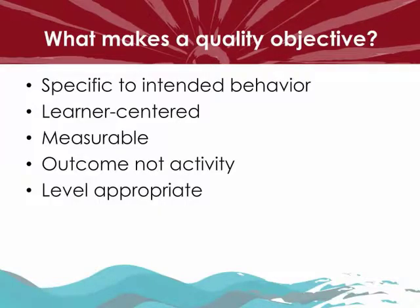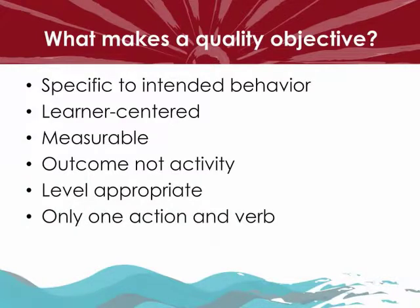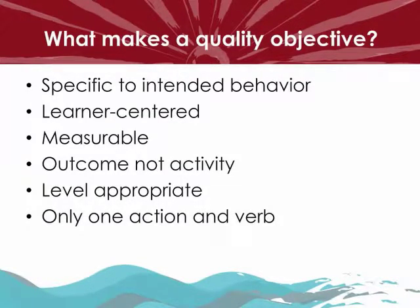Objectives should be appropriate for the level of students. This presentation will later present Bloom's Taxonomy. Level appropriateness does not mean we don't challenge students to reach higher orders of the cognitive domain; it means the way we ask them to reach higher order learning uses skills and knowledge appropriate for their place in material acquisition. Finally, quality objectives are simply stated using only one action and one verb — avoid compound objectives. If you find yourself wanting to say 'and...', just write another objective.